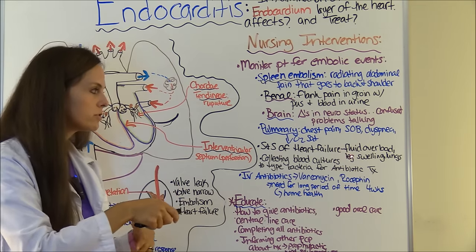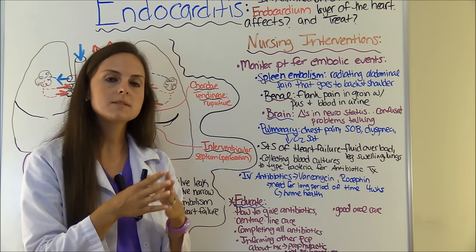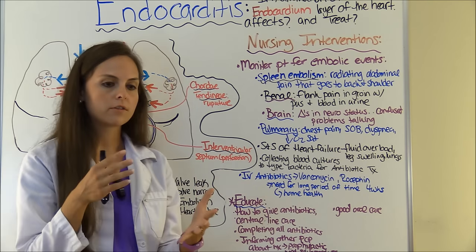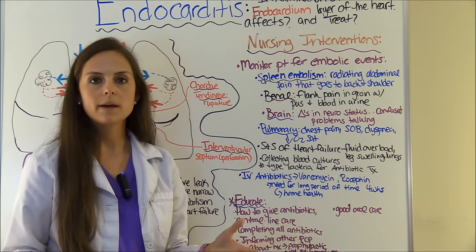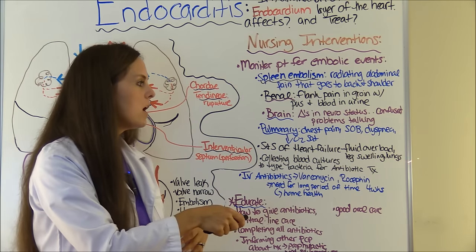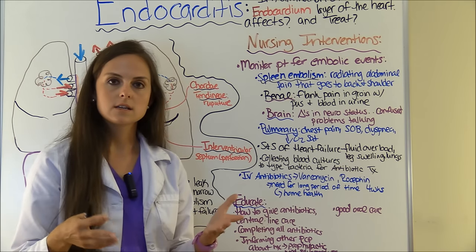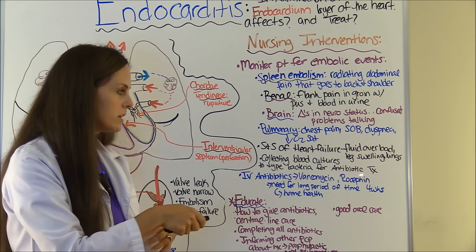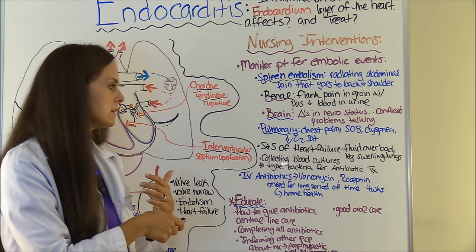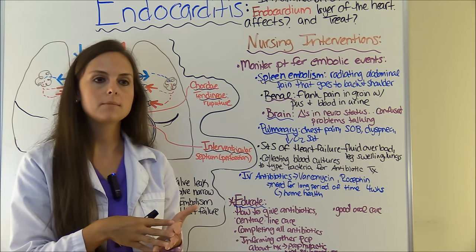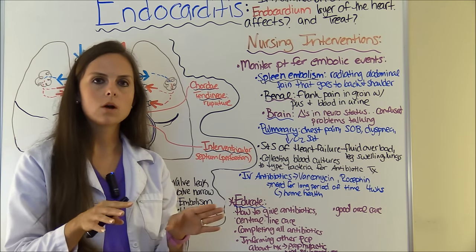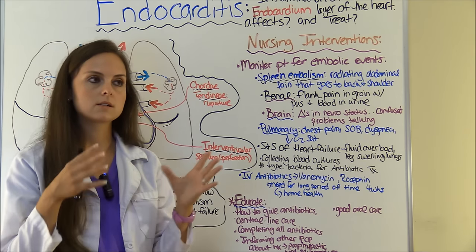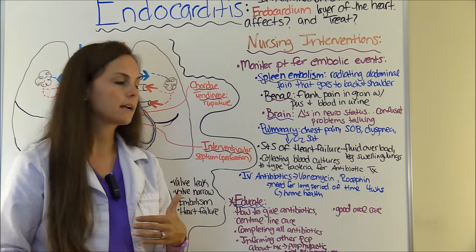Also monitor the patient for signs and symptoms of heart failure. Look for fluid overload — swelling in the legs, belly, arms, and hands — and check whether the lungs are congested with crackles. Another intervention is collecting blood cultures as ordered to identify what type of bacteria is growing in the blood so it can be treated with specific antibiotics, since specific antibiotics target certain bacteria.